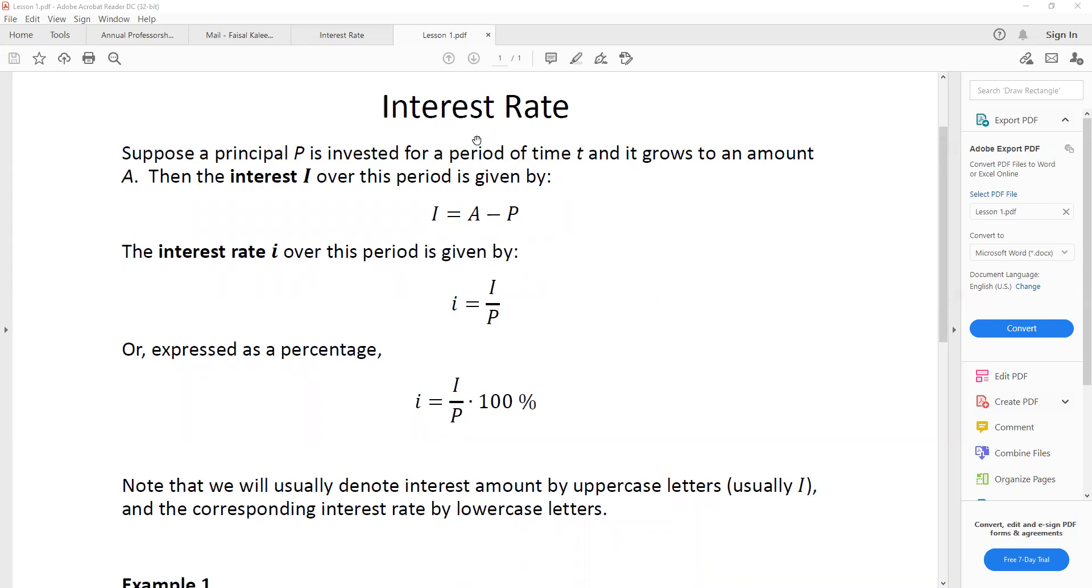So the first lesson is interest rate. Suppose a principal P is invested for a period of time T, and it grows to an amount A. So P is the initial amount, and A is the final amount. Then the interest I over this period would, of course, be the final amount minus the initial amount. So I is equal to A minus P.